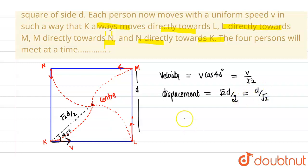Now we have to find out the time, so time is given by displacement by velocity. Time is nothing but displacement divided by velocity.